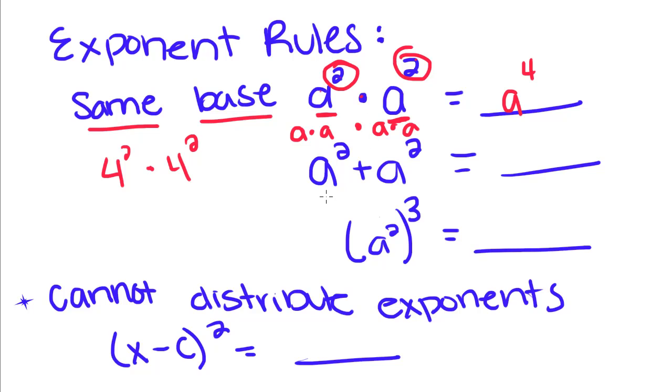When we're adding exponents with the same base, this becomes 2a squared, because this is a times a times a plus a times a, so this is a squared, this is a squared, since we have 2 of them, we can combine them like that.